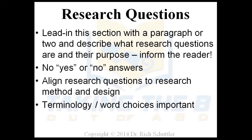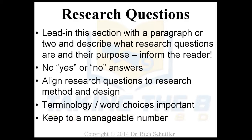Terminology and word choices are critical. You're thinking like a researcher and writing like a researcher, so you can't stipulate in a question what the outcome of something is. You want to be very specific — particularly in a quantitative study — using phrases like 'to what extent, if any, is the correlation between.' This is where you start to look at terminology and word choices to be specific and succinct. I believe that research questions, particularly for a doctoral dissertation, should be kept to a manageable number. Three are ideal.